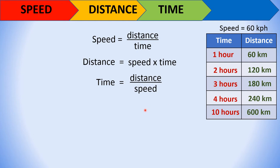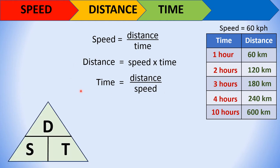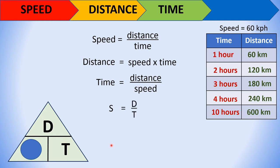To make it easier to remember the formulas, you can use the DST triangle. The letters are in alphabetical order: D comes first, then S, then T. To solve for speed, cover S — what remains is D over T, so S = D/T, which is speed equals distance over time.